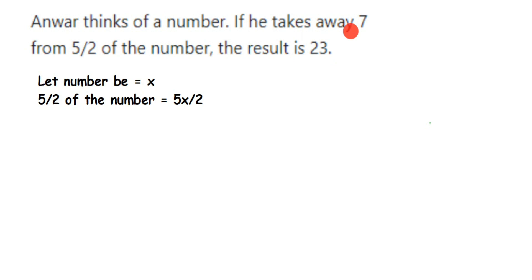From 5 upon 2 of a number. Now what is 5 upon 2 of a number? 5 upon 2 of a number will be 5 by 2 of the number which you have assumed as x. So 'of' means multiplication, so it will become 5 by 2 multiplied by x, which is equal to 5x upon 2.